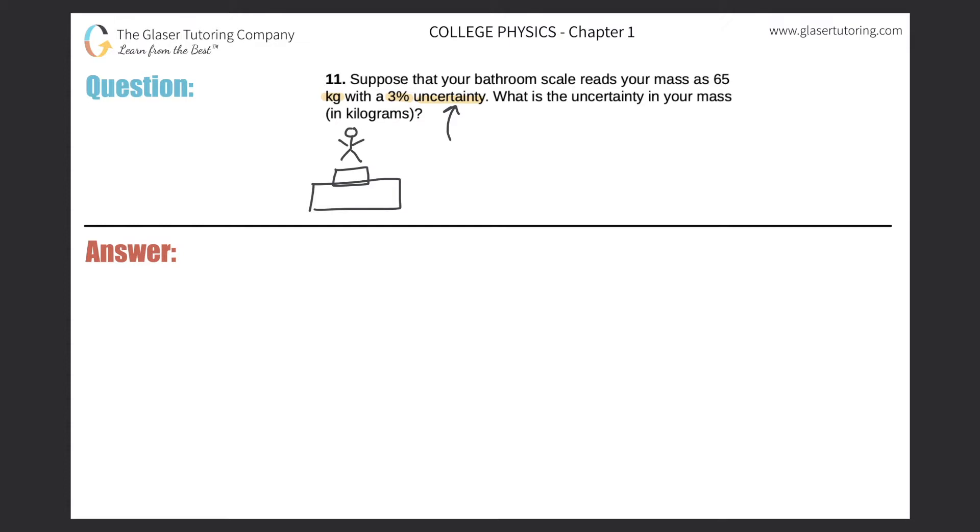And you step on it, and the scale will read 65 kilograms. But there's a 3% uncertainty associated with this measurement. So what that means is we're really unsure, and we're unsure by the value of 3%. So 3% of what? Well, 3% of the mass that was detected, of the 65 kilograms.